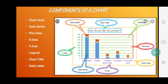Y-axis: The y-axis is the vertical axis and contains data. It is also known as value axis. Legend: The legend is a box that identifies the patterns or colors that are assigned to the data series or categories in a chart.